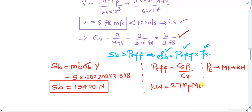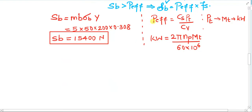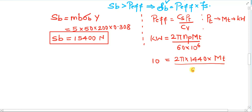The power formula is: kW = (2π × N × Mt) / (60 × 10⁶). Power is 10 kW transmitted at 1440 rpm. With one equation and one unknown, we can directly solve for Mt. The value of Mt works out to 66,314.56 N·mm.